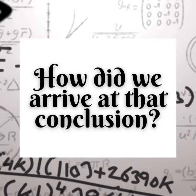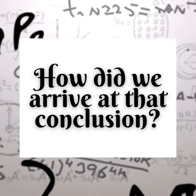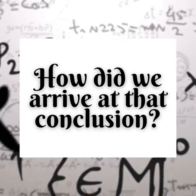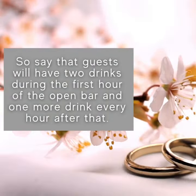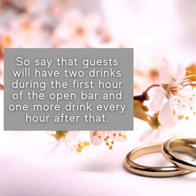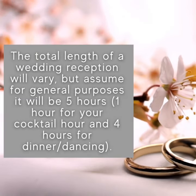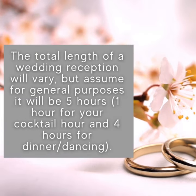How did we arrive at that conclusion? Guests will have two drinks during the first hour of the open bar and one more drink every hour after that. The total length of a wedding reception will vary, but assume for general purposes it will be five hours — one hour for your cocktail hour and four hours for dinner and dancing.